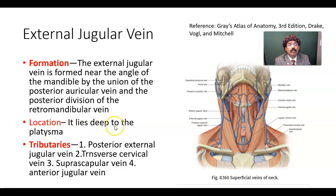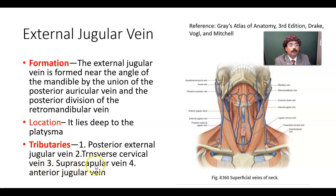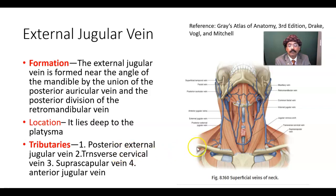Regarding location, it lies deep to the platysma in the superficial fascia for most of its course. Its tributaries include the posterior external jugular vein, the transverse cervical vein, the suprascapular vein, and the anterior jugular vein.